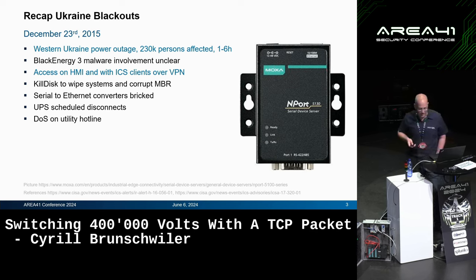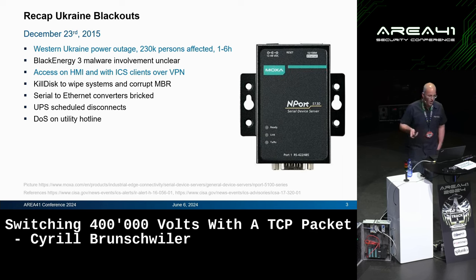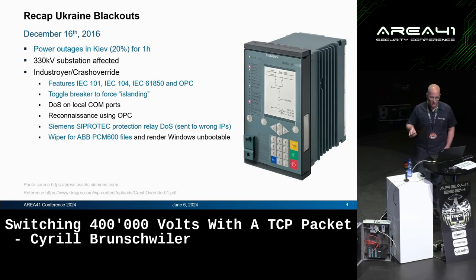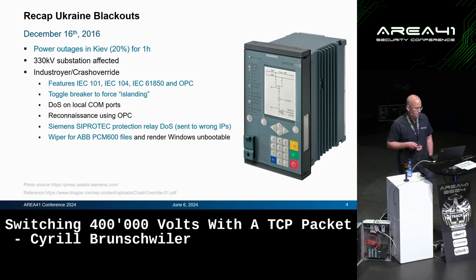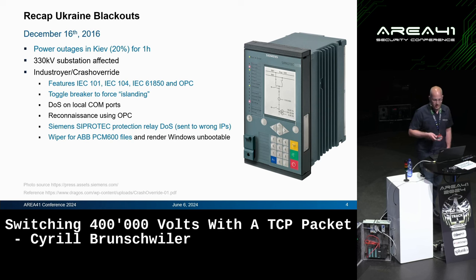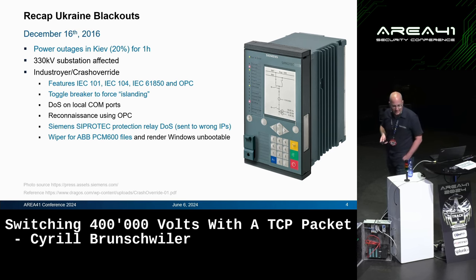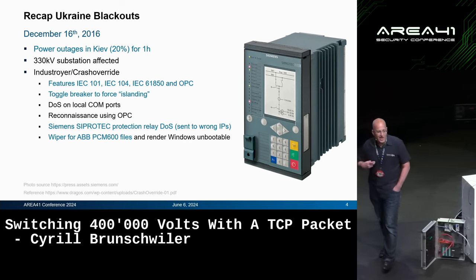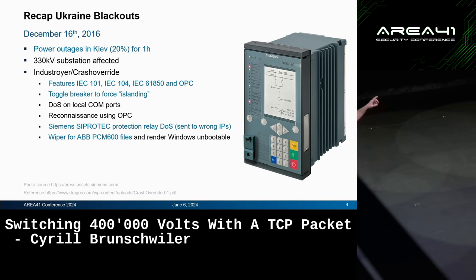They also did destructive things like corrupting firmware on devices — specifically the Ethernet-to-serial converters — so those wouldn't work anymore, making it hard to restore a substation. One year later, in December 2016, part of Kyiv went dark. They deployed a real dedicated malware that came with a ton of protocols, all with separate DLLs. They tried to toggle the breaker to force islanding, denial-of-service intelligent electronic devices like the Siemens Siprotec, and wipe PCM600 engineering files. My aim is to make you understand what this really means in the next 40 minutes.